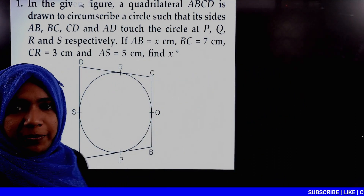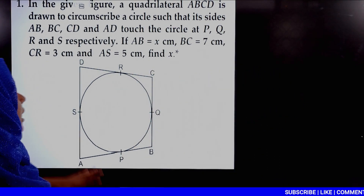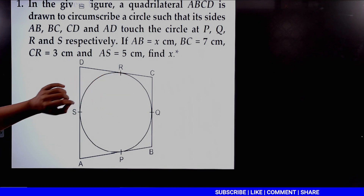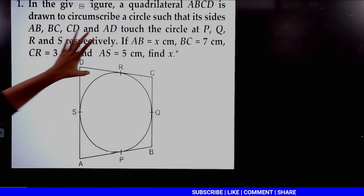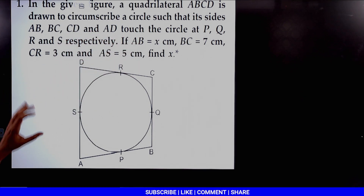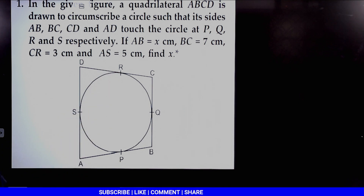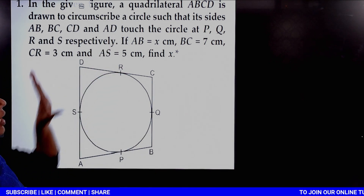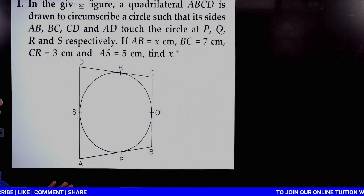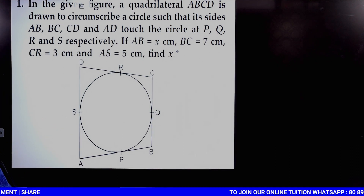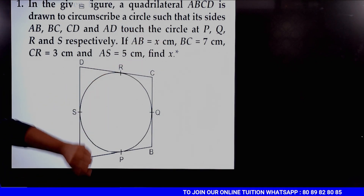So this is the first question. In the given figure, a quadrilateral ABCD is drawn to circumscribe a circle. That circle is circumscribed by the quadrilateral, and its name is ABCD.